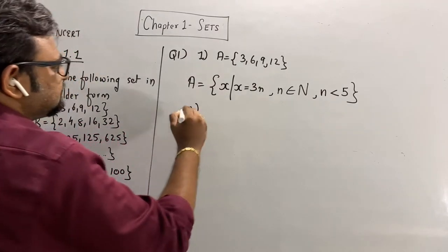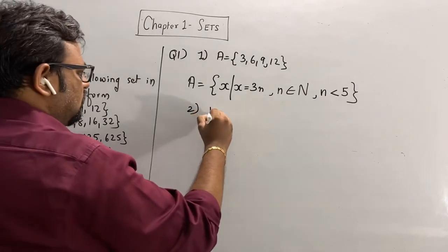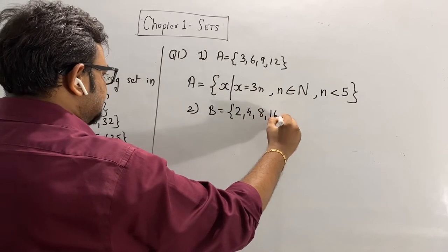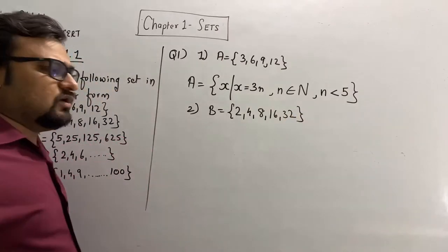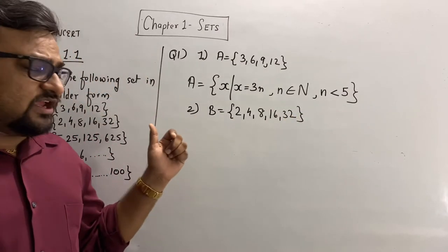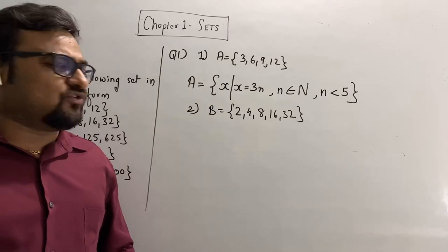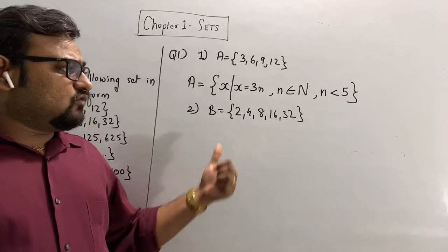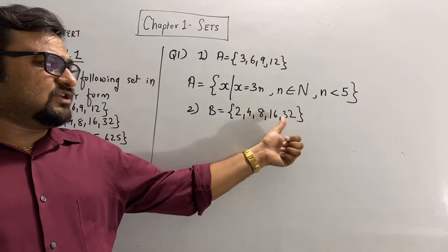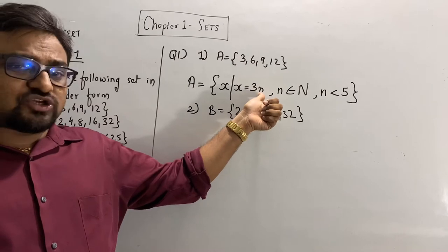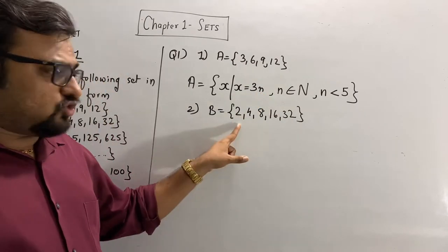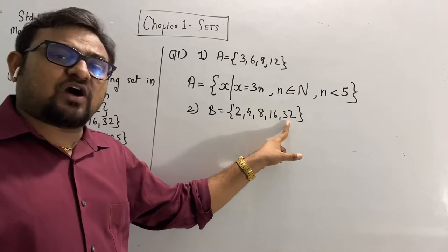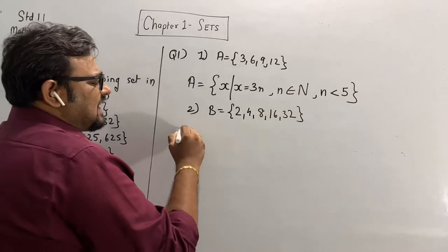Now the second one: B = {2, 4, 8, 16, 32}. See what kind of relation you can find between these numbers. 2, 2 twos are 4, 4 twos are 8, 8 twos are 16, 16 twos are 32. But I cannot use 2n here because 2 × 3 = 6, which is not in our set. Instead, it is 2¹, 2², 2³, 2⁴, 2⁵.